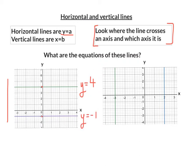Now vertical lines are of the form x equals b. So we've got two vertical lines here. So this one, the green one,